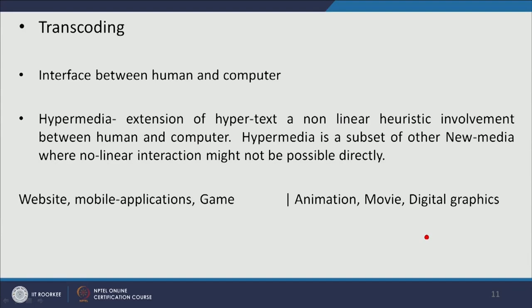Another term to discuss here is hypermedia — it is an extension of hyperlinking where non-linear heuristic interaction happens between user and computer. If we have hypertext, people can select a particular hypertext and choose the particular path — as we were discussing at the beginning of this lecture. There is a process of co-evolution, co-creation, and co-design which unfolded because of the new media paradigm.